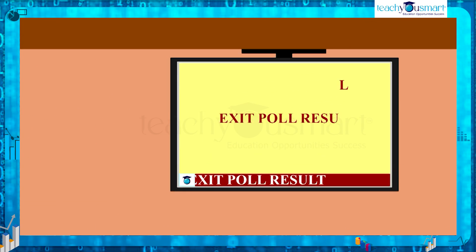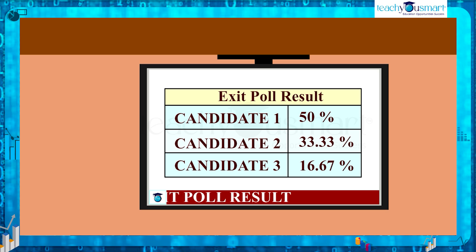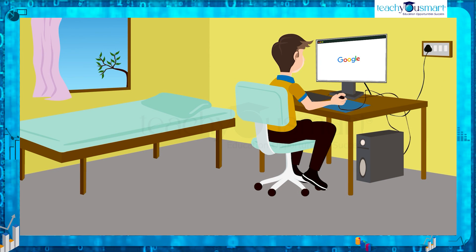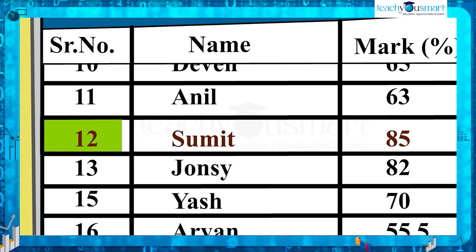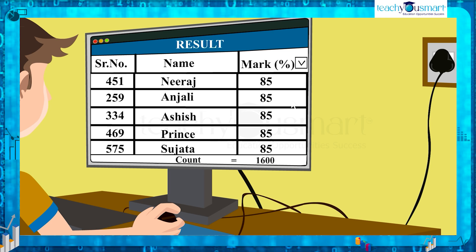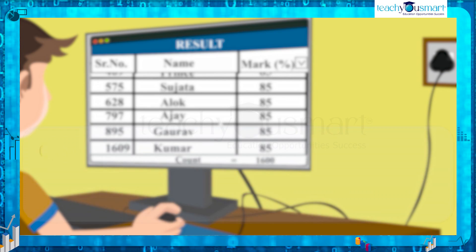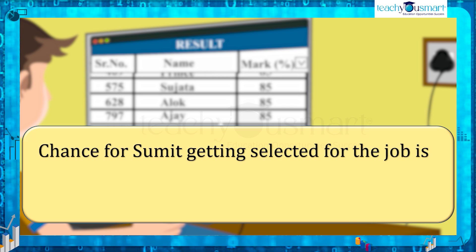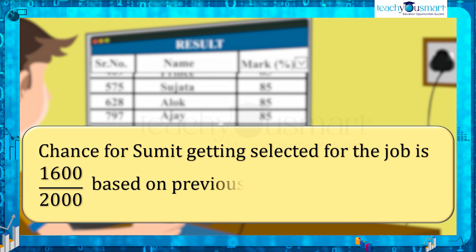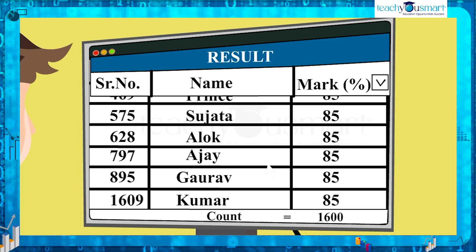An exit poll after people have cast their votes is also used to predict the probability for a candidate to win the election. Next, suppose Sumith has scored 85 percent marks in an examination. Last year, out of 2000 candidates who secured 85 percent marks, 1600 students were selected for the job. So the chance of Sumith getting selected for the job is 1600 out of 2000, based on previous year's data. Now we can calculate the probability of Sumith's selection.